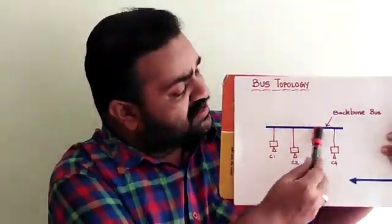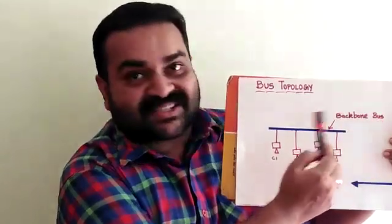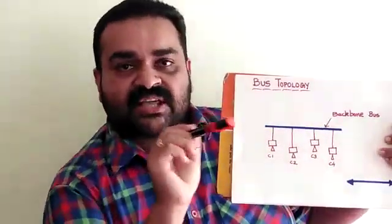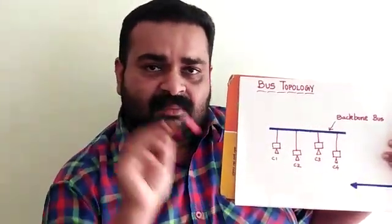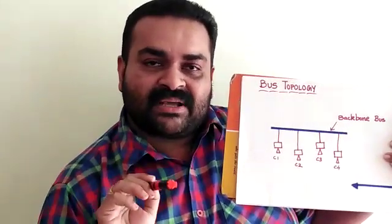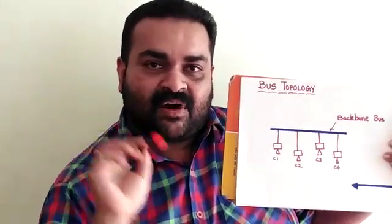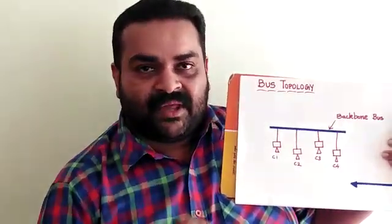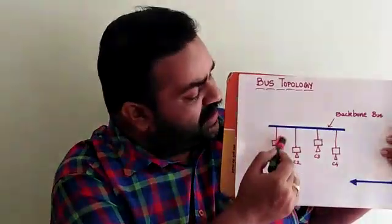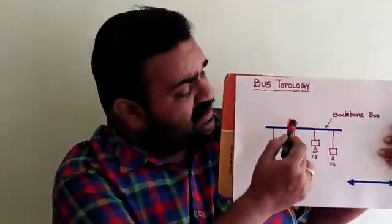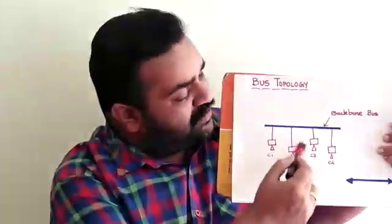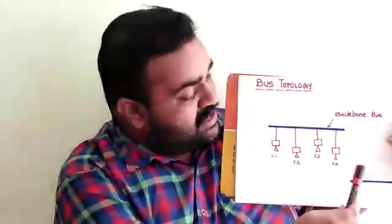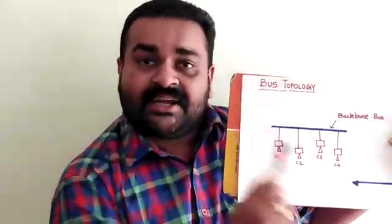There is a centralized backbone bus cable. We are connecting all machines to that cable. Think of it like a central pipe in a water tank with water points along the pipe. We are using a centralized bus and connecting to the machines. The centralized bus ends are terminated.